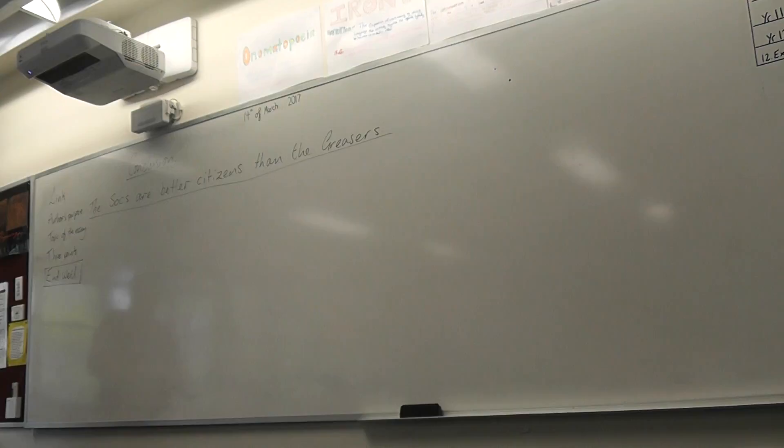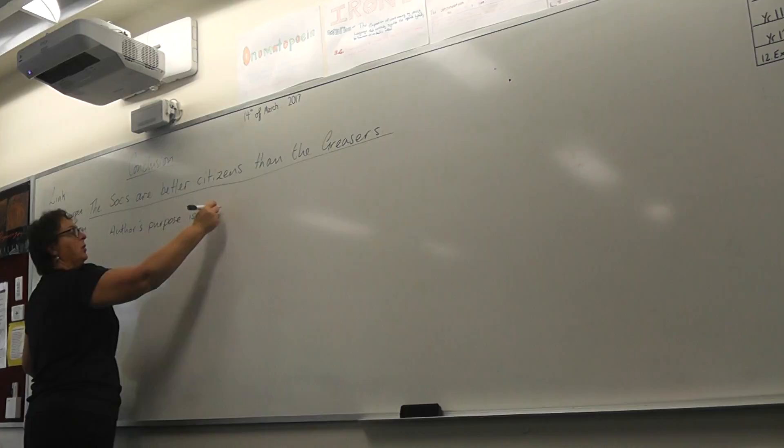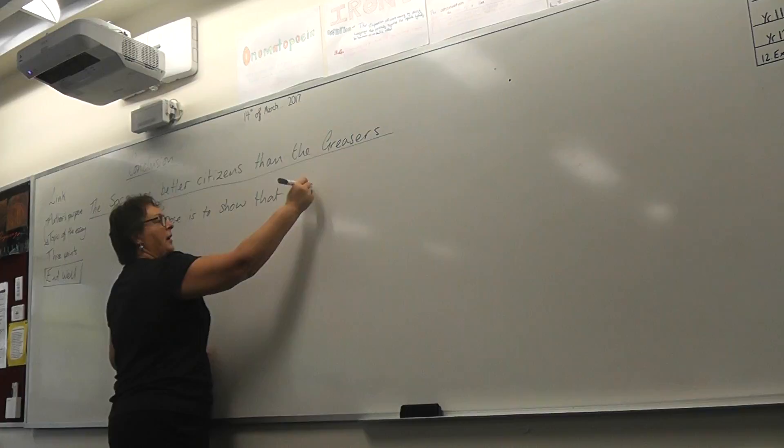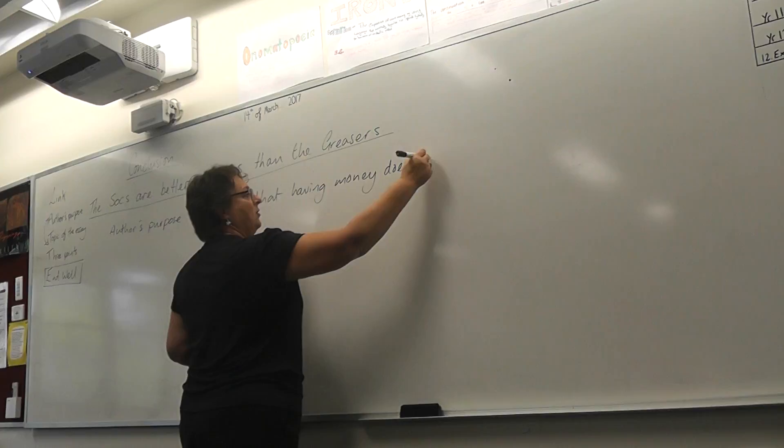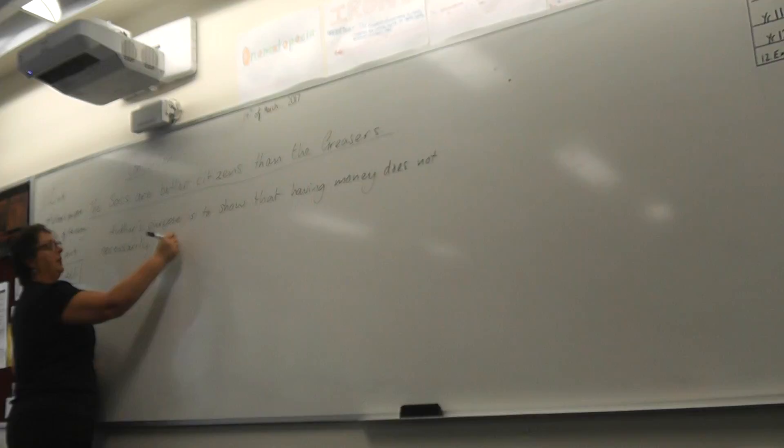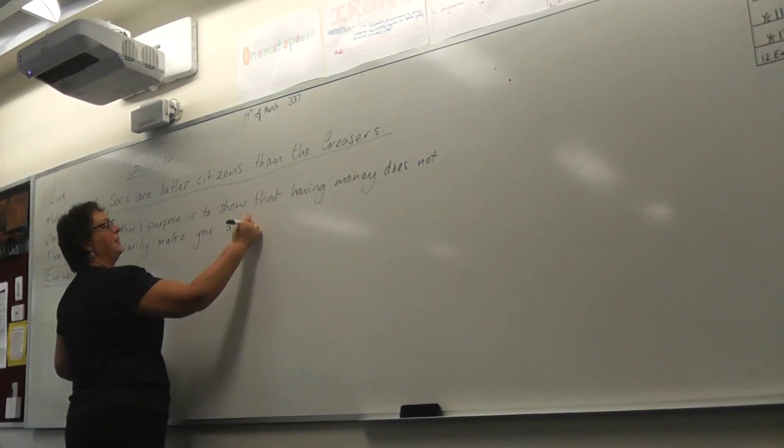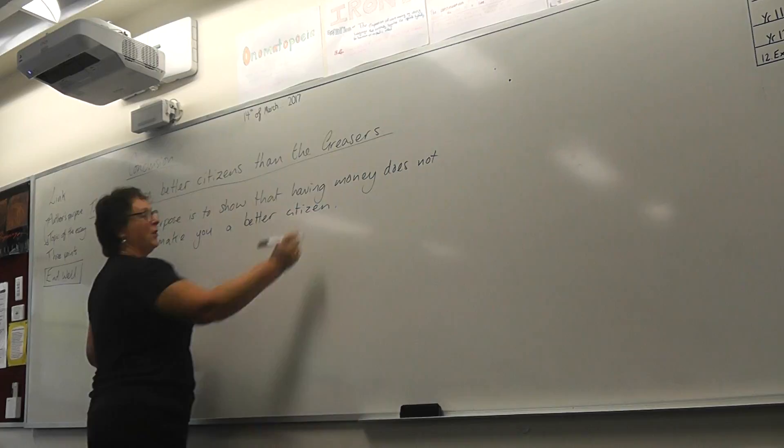So the socials are better citizens than the greasers. I'm actually just planning now. I'm back on my planning page. So I'm thinking that the author's purpose is to show that having money does not necessarily make you a better citizen. Is that spelled correctly? Can you check it, please? Maybe. I'm an English teacher. Yeah, but that doesn't mean I know how to spell everything correctly. It looks right. Because I'm smart. Thank you.